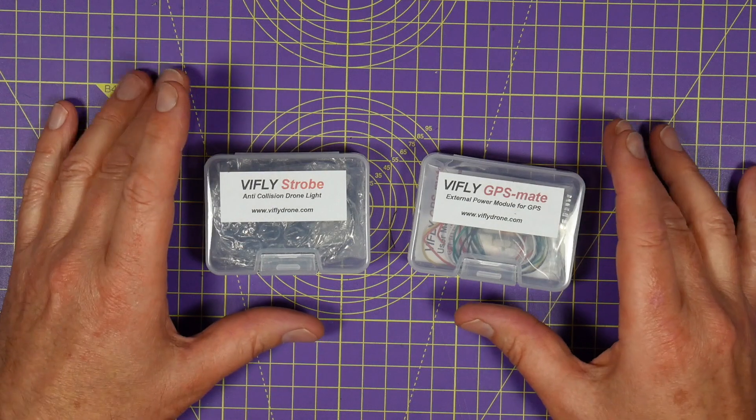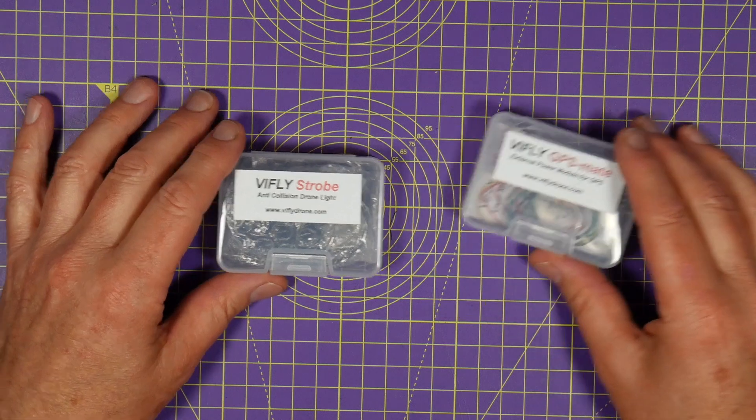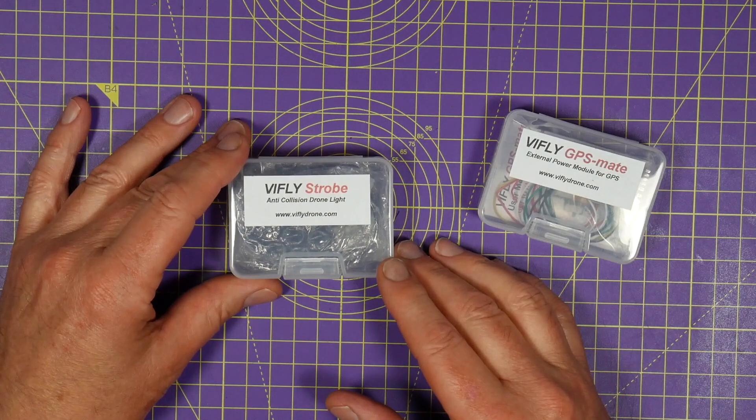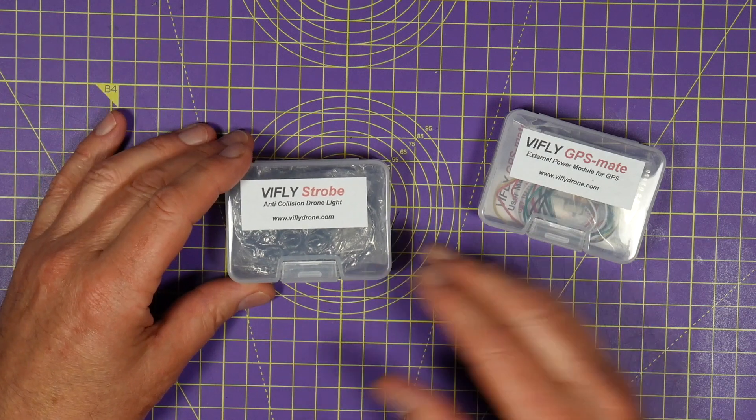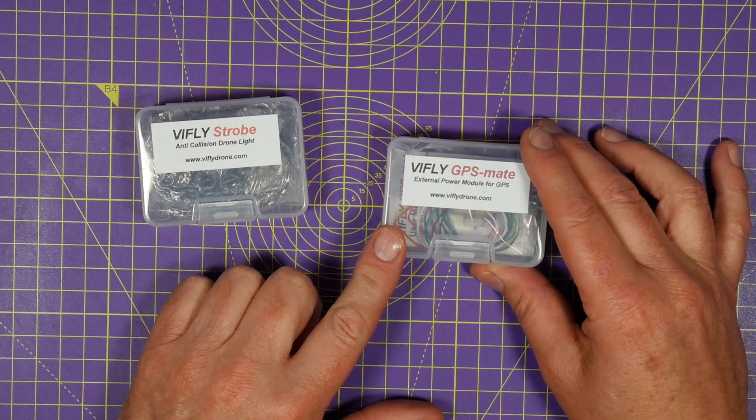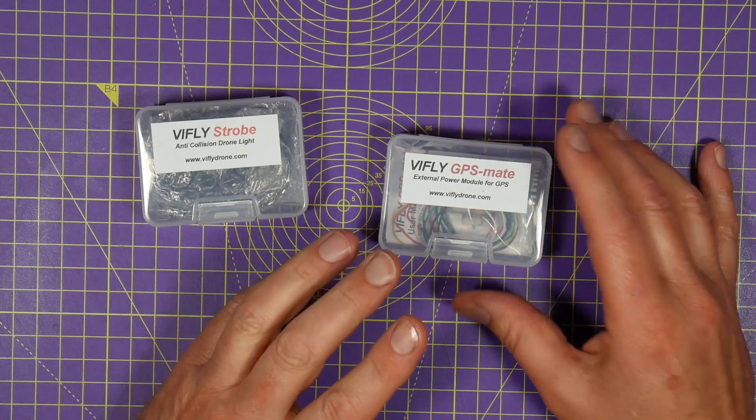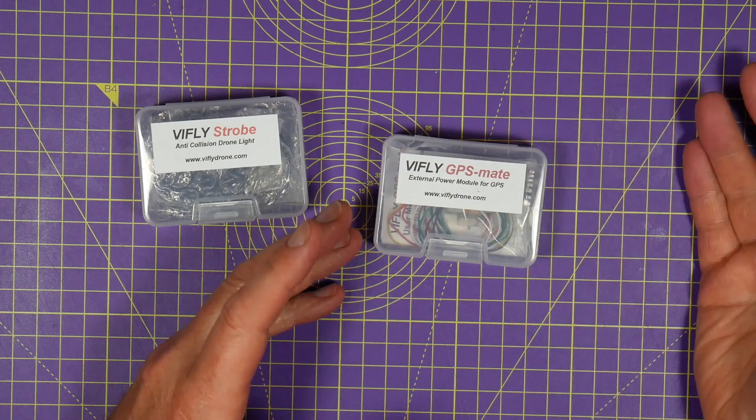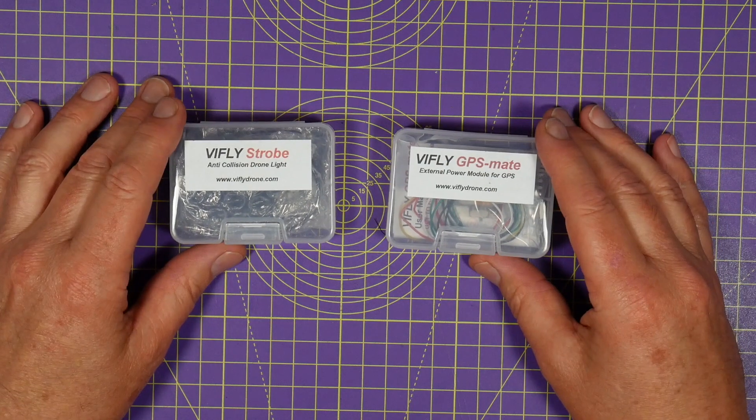They've just released a couple of new products that are yet again very interesting. So we've got the ViFly strobe, which is an anti-collision strobe for drones with a few extras the competition has missed, and this is the GPS mate. It's a clever solution to getting a faster satellite fix when you're using a GPS module for Betaflight or iNav. Hello and welcome to the Woolly Bloke channel.